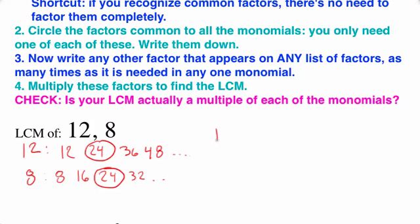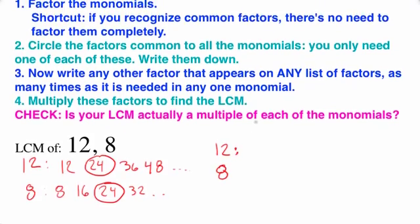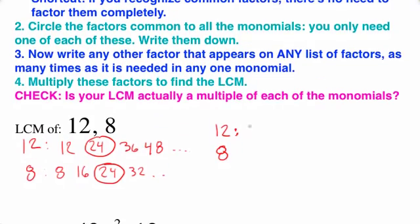So what we're going to do is we're going to use a more sophisticated method where we factor. So here we are going to have the factors of 8. And notice in the instruction number 1, in our shortcut, if we recognize a common factor, there's no need to factor it.